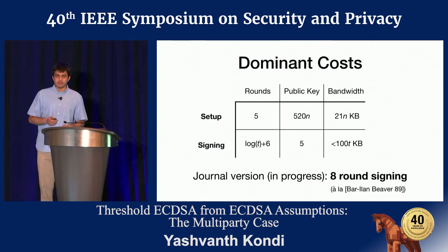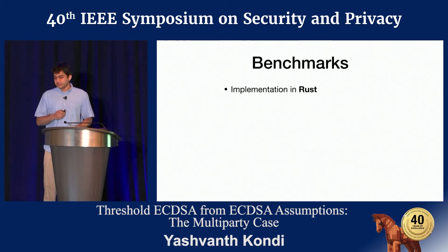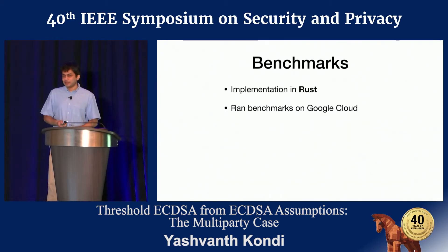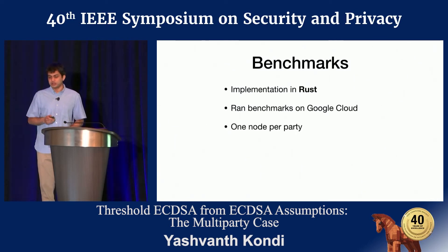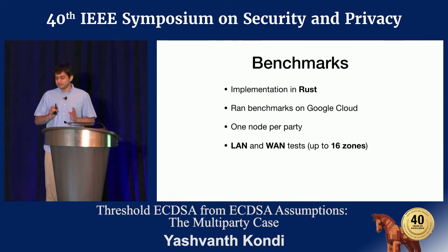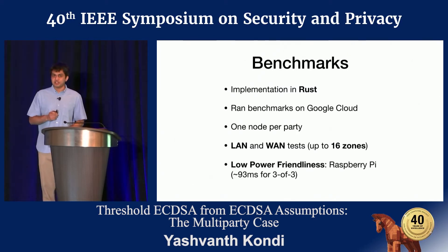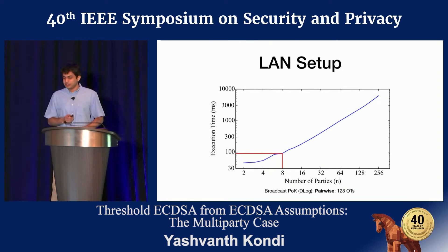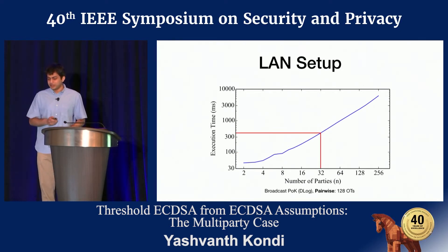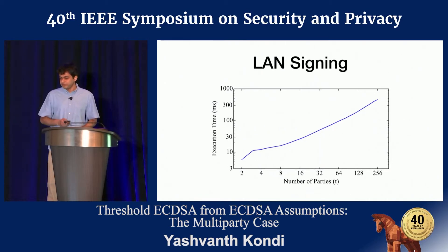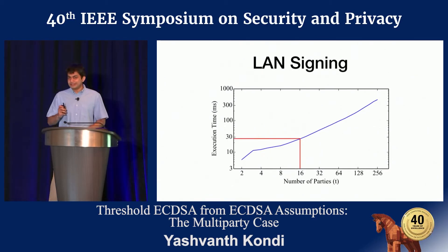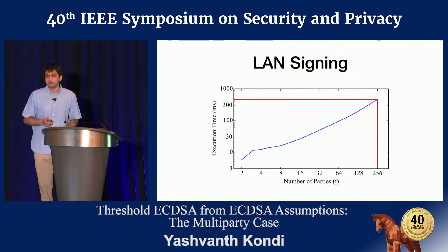In the journal version in progress, we use the technique of Bar-Alan and Beaver to get an eight-round signing protocol. We implemented the protocol in Rust and benchmarked it with nodes on Google Cloud, one node per party. We ran benchmarks in LAN and WAN settings up to 16 zones, and also benchmarked with Raspberry Pi devices — with three devices signing in under 100 milliseconds. Setup costs under 100 milliseconds for up to eight parties, and under half a second for 32 parties in the LAN setting. Signing costs under 30 milliseconds for 16 parties, and under half a second for 256 parties.